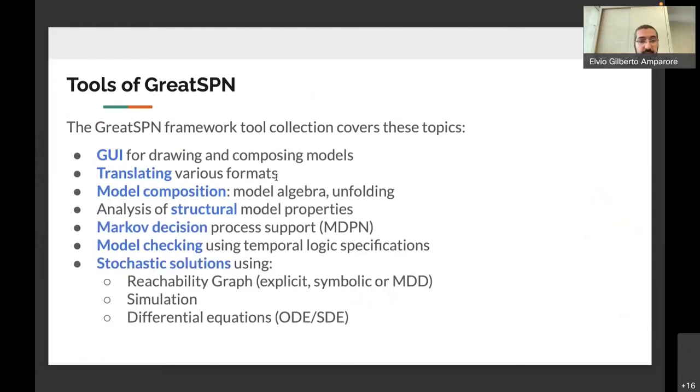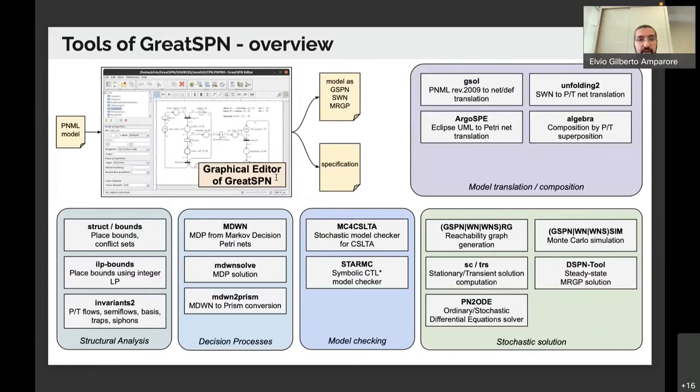And then tools for computing solutions of Markov decision processes, for computing model checking using temporal logic specifications, and then finally for computing the solution of stochastic models using reachability graph explicit symbolic or encoded with decision diagrams, or by using simulation and differential equations. This is a picture that shows the organization of the tools of GreatSPN, and you can find more details of this picture in the paper.